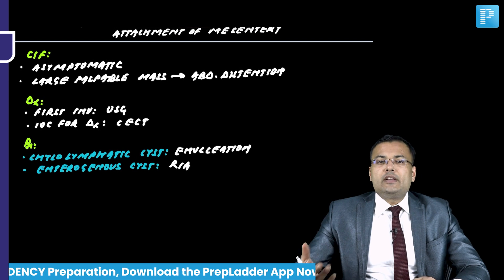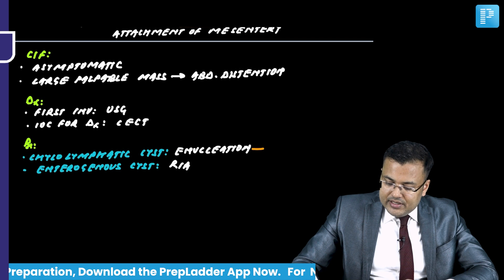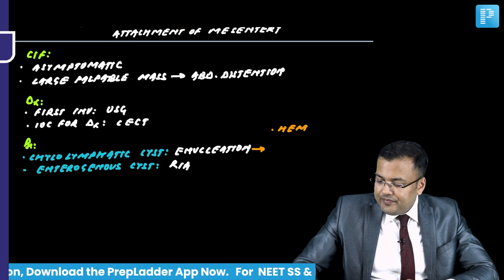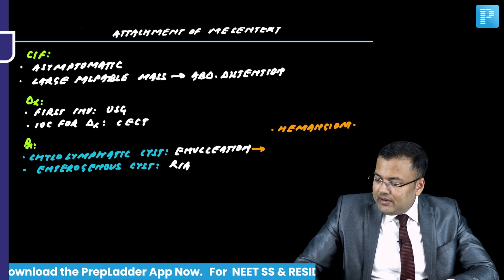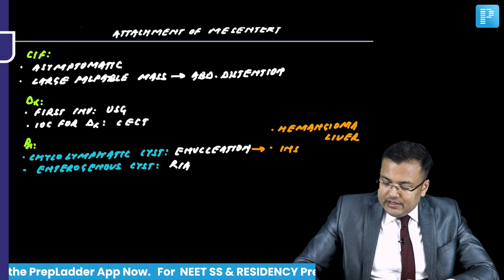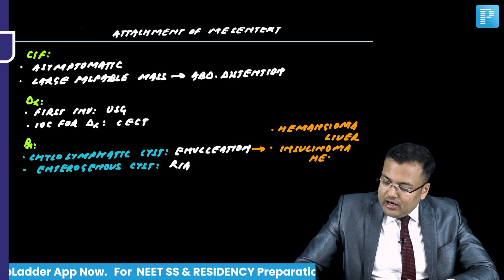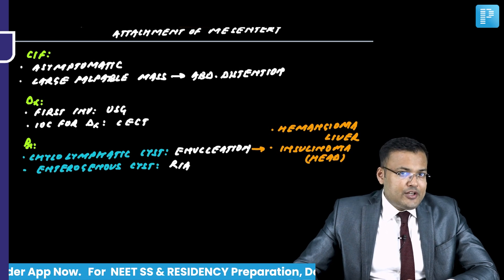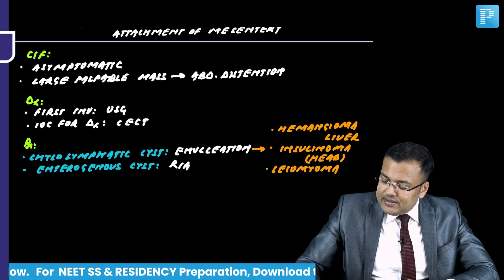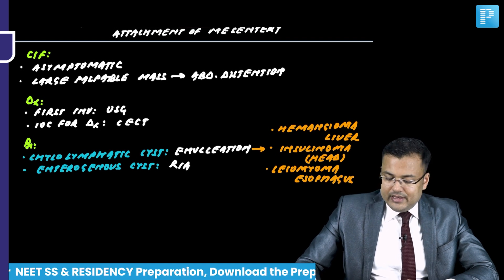Enucleation is also done in other conditions - hemangioma of the liver, insulinoma of the head of the pancreas, leiomyoma of the esophagus (a benign tumor), and chylolymphatic cyst.